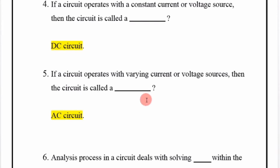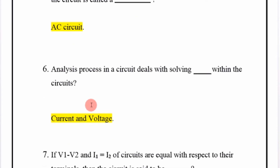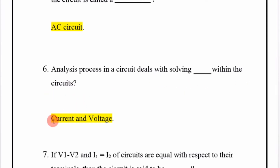If a circuit operates with varying current or voltage sources, then the circuit is called an AC circuit.